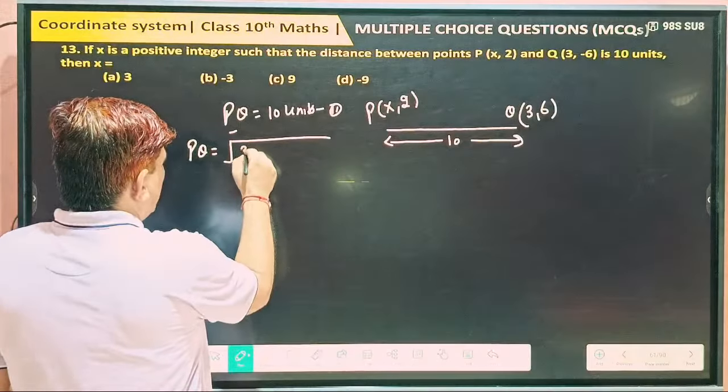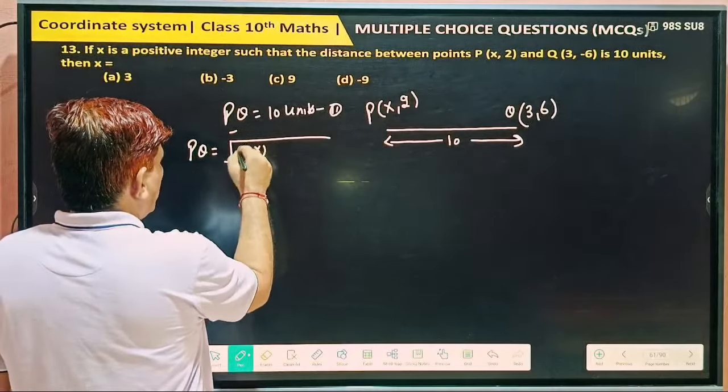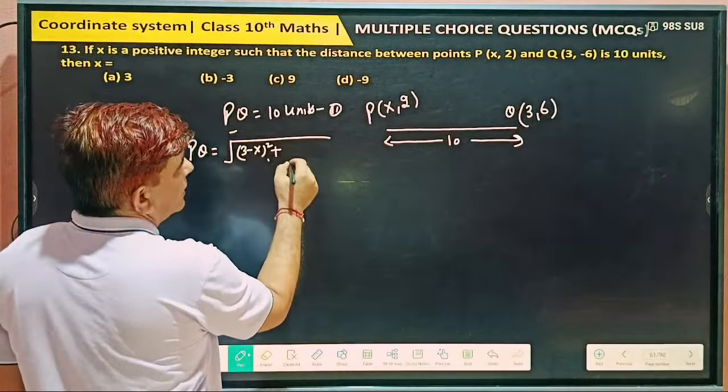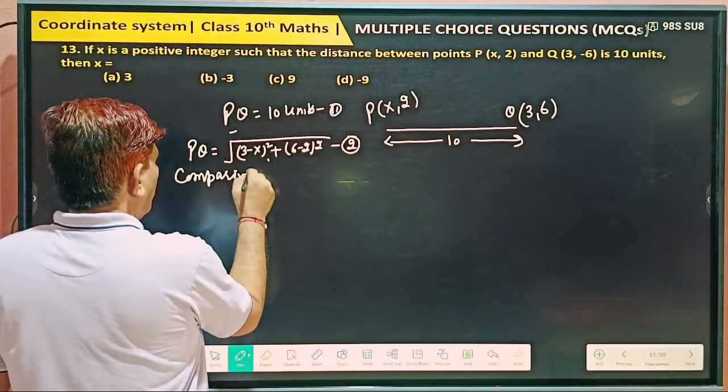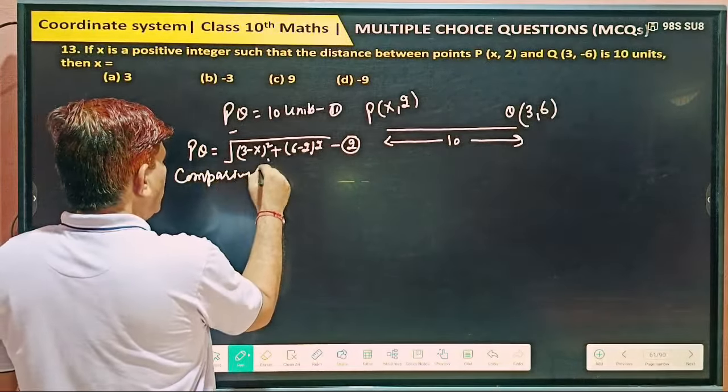This is equation 1. What's it saying? We can find it out by using distance formula equal to under the root 3 minus x whole square plus 6 minus 2 whole square.